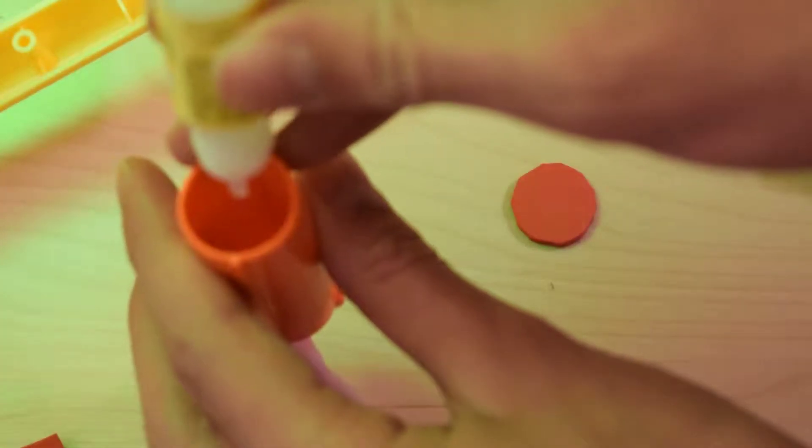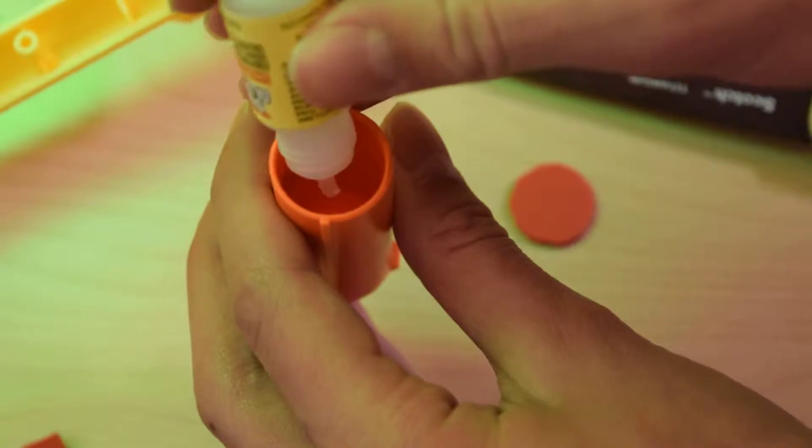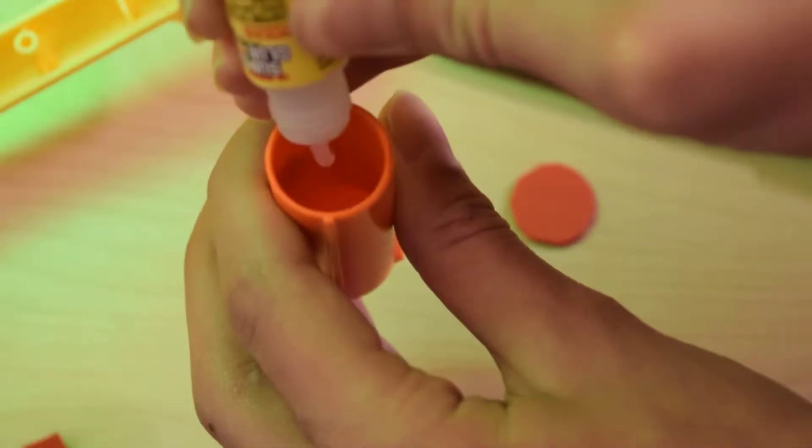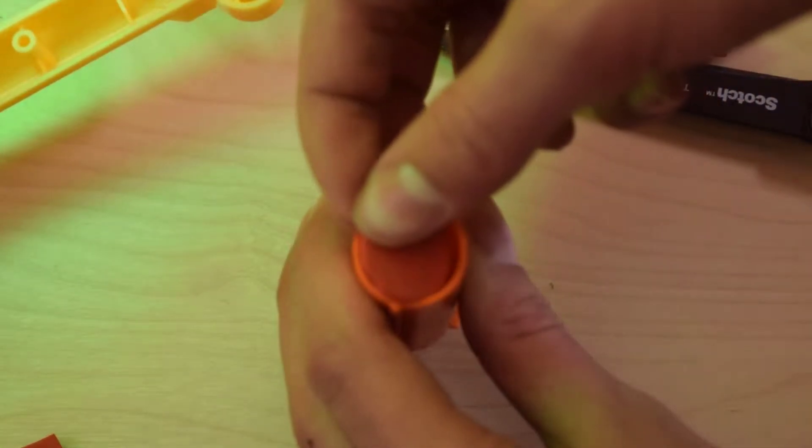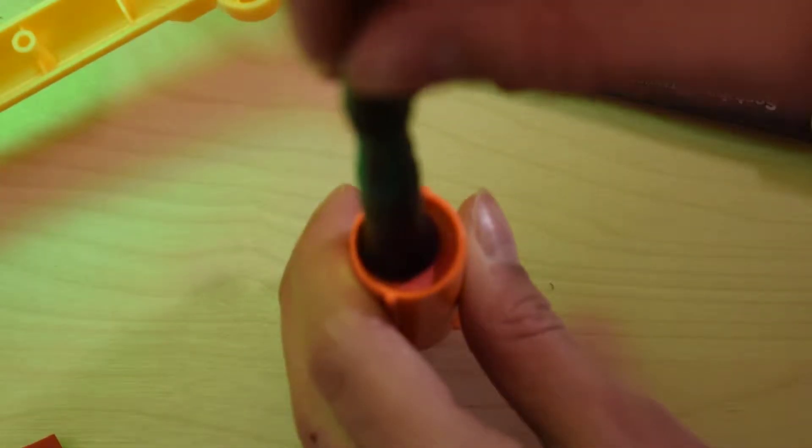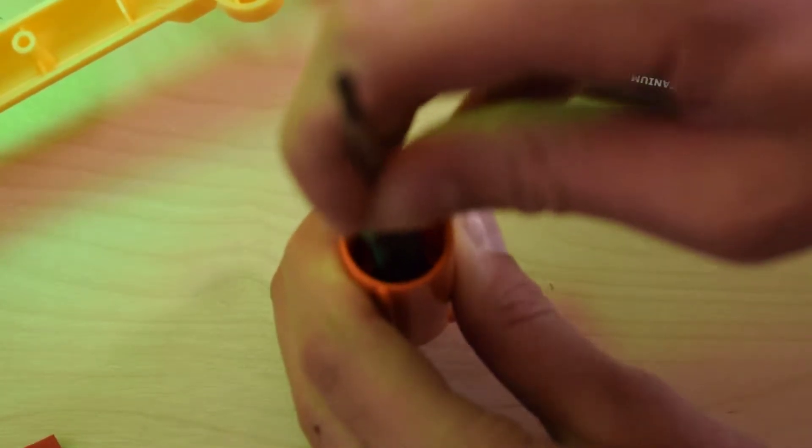Now take your super glue, unscrew the cap, and put a few drops into the bottom. Try to make sure that they don't touch the sides because then the plunger might get literally glued onto the other end, which wouldn't be good. So just drip some glue down, and then take your piece of foam and push it down. You can use your screwdriver to make sure it reaches the bottom, and then just press it down and wait for it to dry.